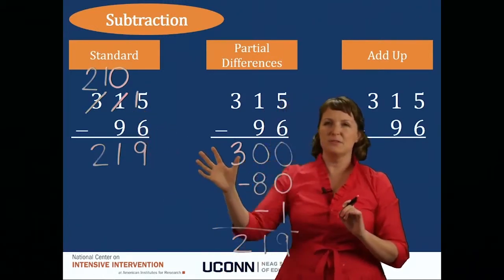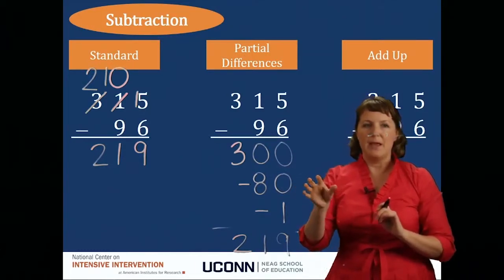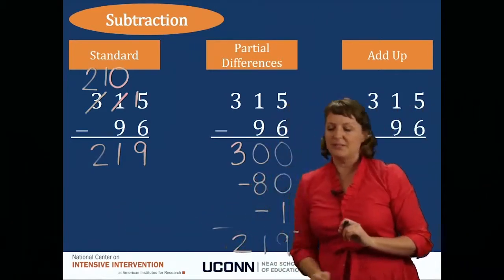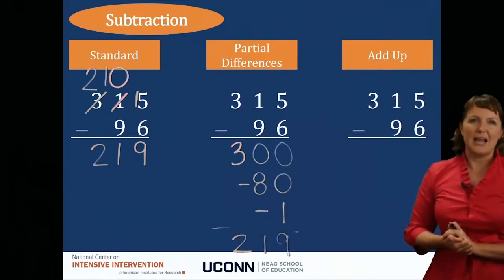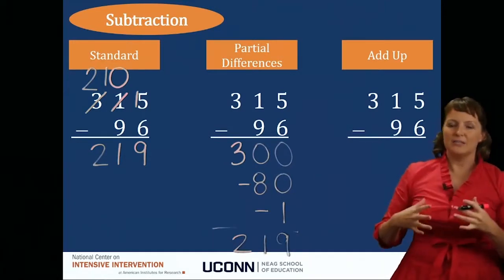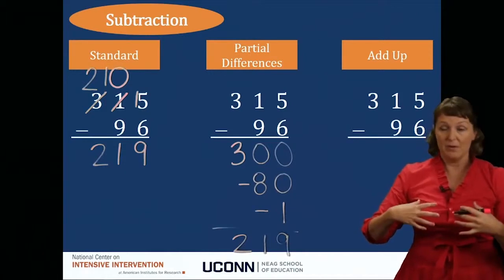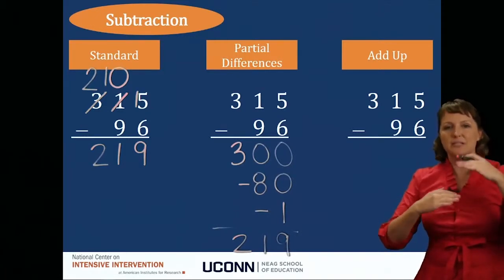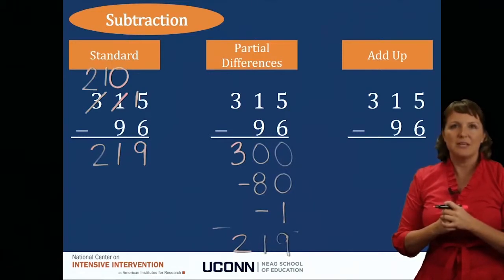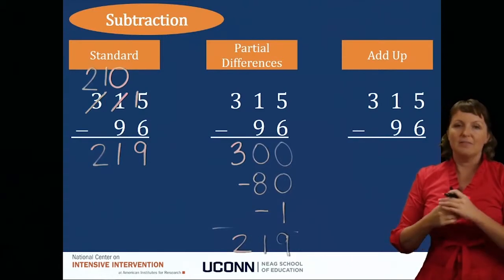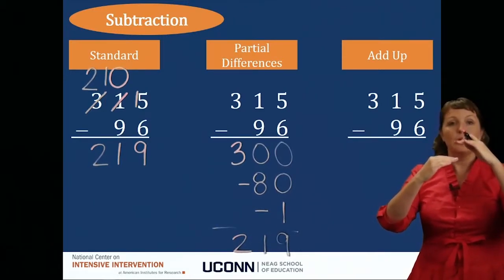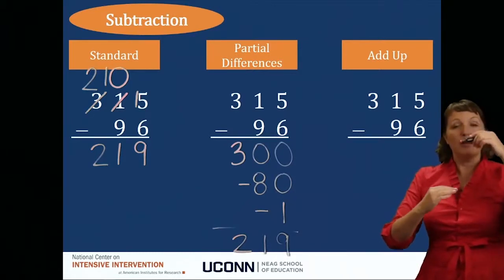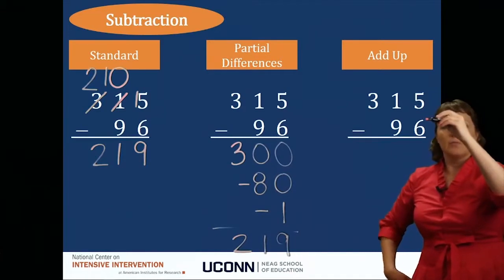Notice the difference in notation between the standard algorithm and partial differences. There's one other strategy: the add up strategy. If students are having difficulty with multi-digit subtraction and neither the standard algorithm nor partial differences has clicked, we might use this. Remember subtraction can be thought of as the difference between two amounts. If I think about 5 minus 3, I can start at 3 and move up to 5 — so instead of subtracting, we're going to add.